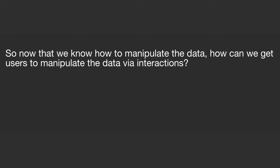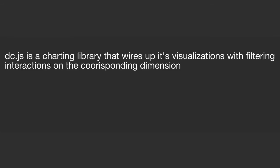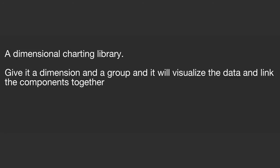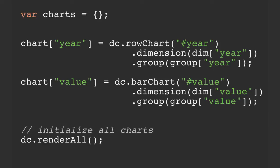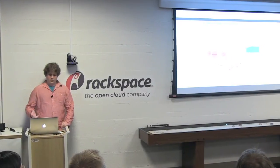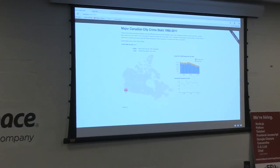So now that we know how to manipulate the data, how do we get the users to manipulate the data? You want this to be an interactive visualization, not a workspace. You can leverage something like dc.js — a charting library that wires up all the visualizations with some filtering interactions on the corresponding dimension. Give it a dimension and a group, and it will visualize the data. All you do is create a row chart, give it a dimension, give it a group, and you're good to go. Same for a bar chart. Very simple — it allows you to create these interactive visualizations very quickly.